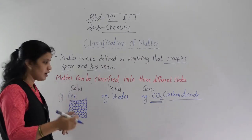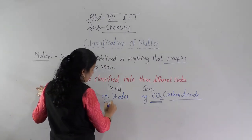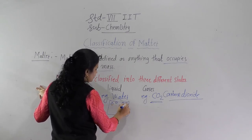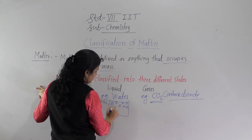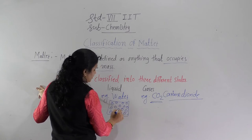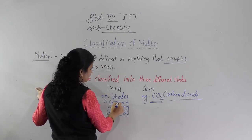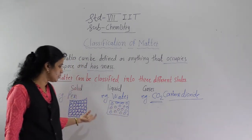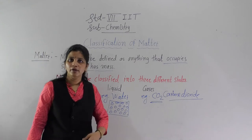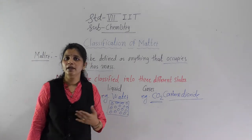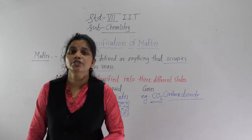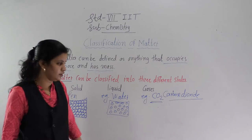In the liquid state, the molecules are loosely packed and there is some space between them. Because of this loose packing, water can flow easily and take the shape of any container. That is why water does not have a fixed shape, but it does have a fixed volume.